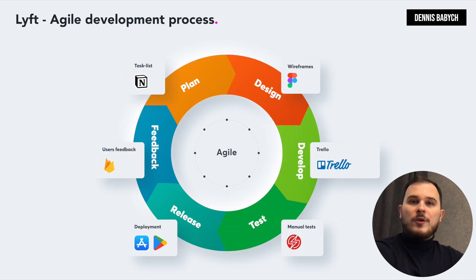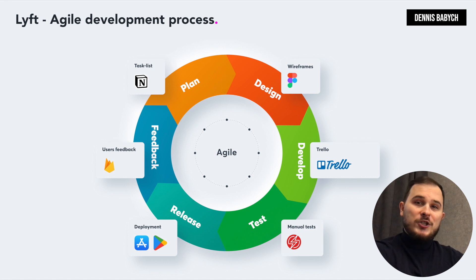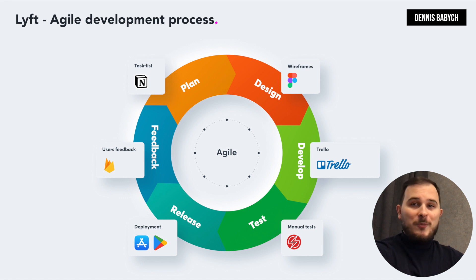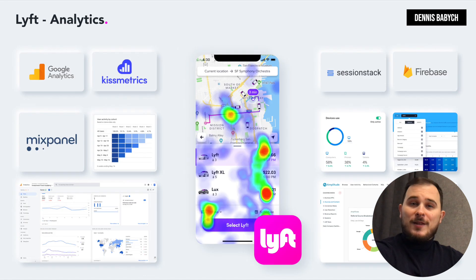Fourth, utilize an agile methodology in your software development process. The primary idea is to create a feature, run the app for your audience, obtain feedback, improve the feature, and repeat the process until you have created a real gem.